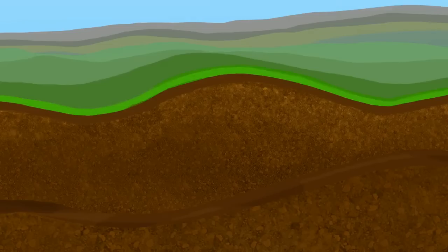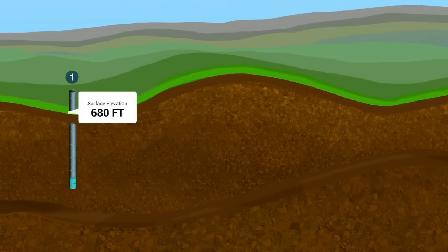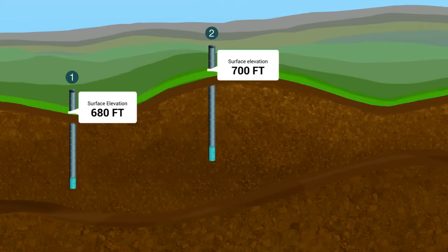Let's look at an example. Well one has an elevation of 680 feet, well two has an elevation of 700 feet, and well three has an elevation of 690 feet.